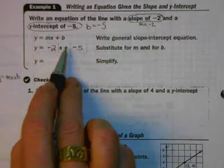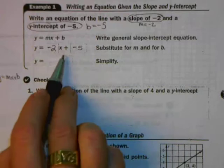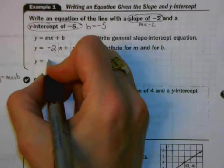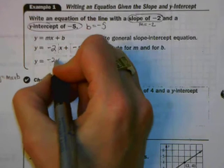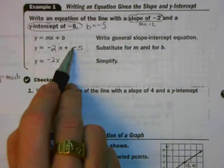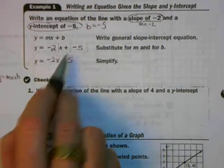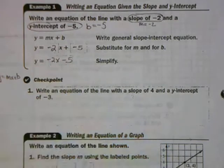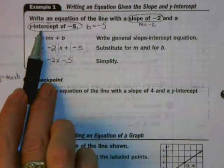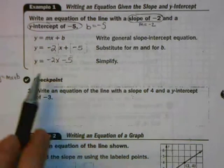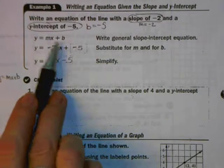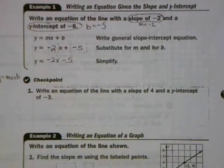So I have y equals negative 2x plus negative 5. If we wanted to, we could simplify this — we can rewrite it as y equals negative 2x minus 5, because plus negative 5 and minus 5 are equivalent operations. So if someone tells you the slope and the y-intercept of a line, it's really easy to write its equation. You just replace m with the slope and b with the y-intercept, and you're done.